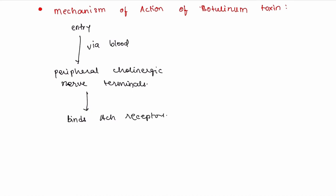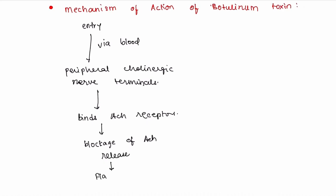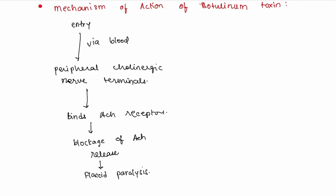As the toxin molecules bind to the ACh receptors, the acetylcholine molecules released from the presynaptic membrane cannot bind to the receptors because the receptors are already engaged with the toxin molecules. This results in the blockade of acetylcholine release, which results in flaccid paralysis.